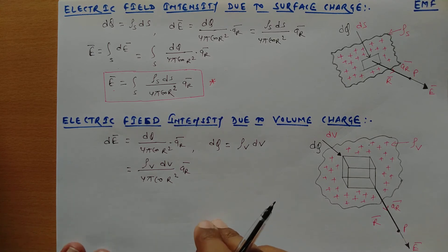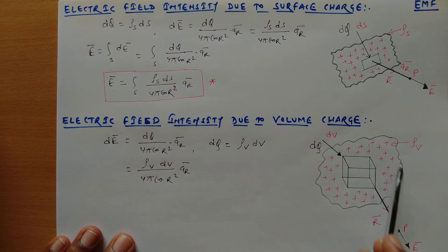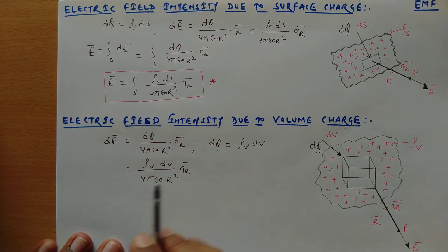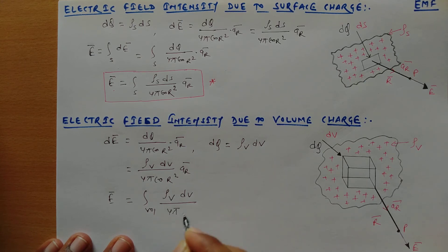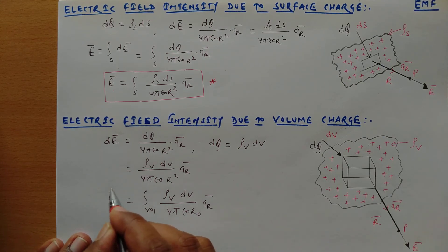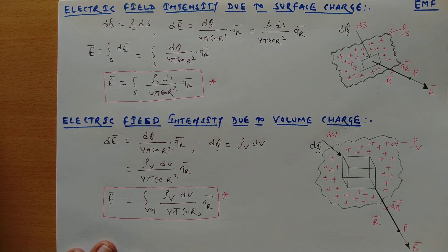If we need to find the total electric field at a point P, we have to take the complete volume integration of this expression. So the total electric field intensity is given by the volume integration: E = ∭ ρv·dv / (4πε₀r²) · ar. This is the electric field intensity expression for a volume charge distribution, and it is important for numericals.